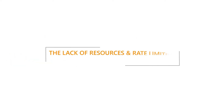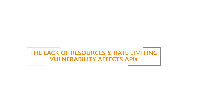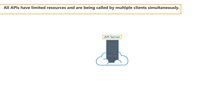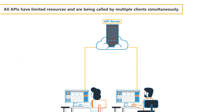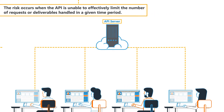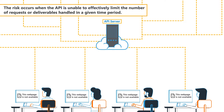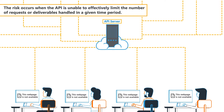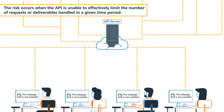The lack of resources and rate-limiting vulnerability affects APIs. All APIs have limited resources and are being called by multiple clients simultaneously. The risk occurs when the API is unable to effectively limit the number of requests or deliverables handled in a given time period.